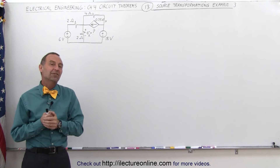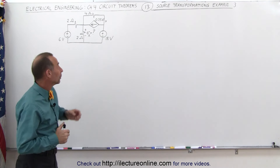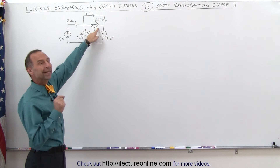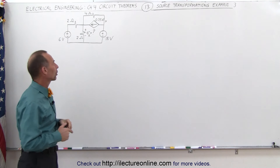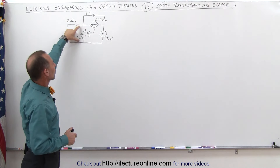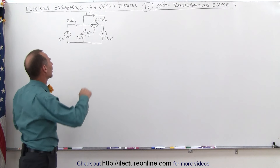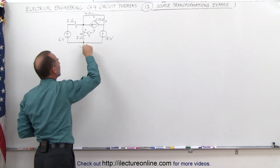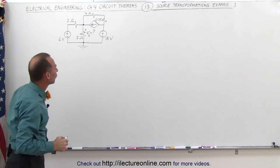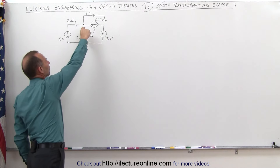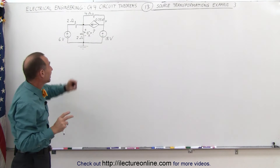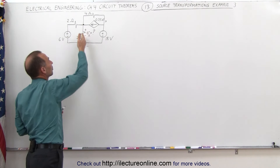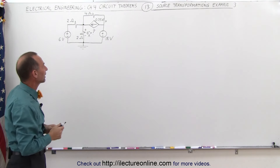Welcome to ElectronLine. Here we have a slightly more difficult problem. We have three sources: two are voltage sources, and one is a dependent current source, which makes it a little more difficult to work with. We're trying to find the voltage across the 2 ohm resistor — the voltage from this node down to this node, referenced to zero volt ground. We're going to remove that 2 ohm resistor, keep the gap, and find the voltage across that gap.